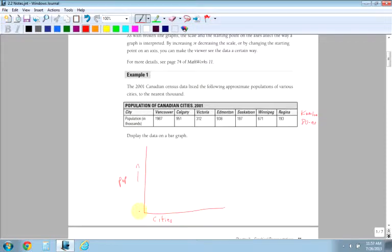The cities go along the bottom and the population goes up this way. Typically what you want to do is you want to start at zero and you want to go up to your maximum value, which would be around 2,000. Round off, don't make it exactly. And then when you do that, you want to make sure that your jumps are appropriate.